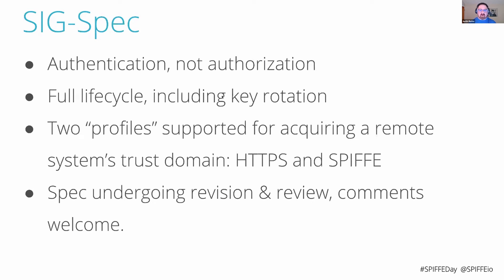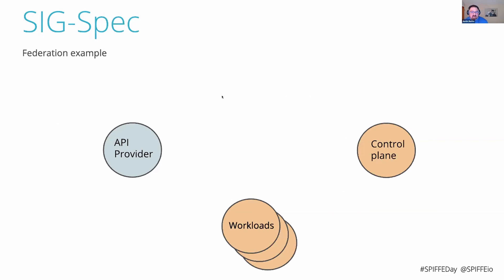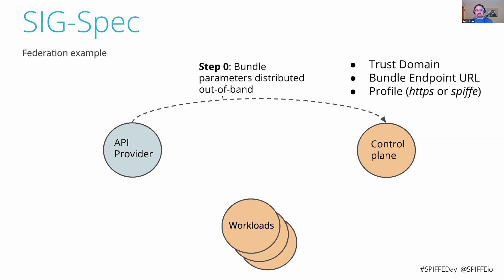Let me show an example. Suppose I have a trust domain consisting of my control plane and workloads, and I'd like to enable some workloads to interact with or federate with an API provider — a foreign trust domain. The first thing the specification covers is an out-of-band distribution of bundle parameters: what the foreign trust domain actually is, and what the bundle endpoint URL is.